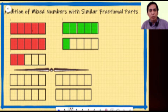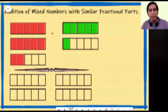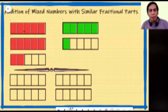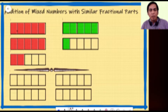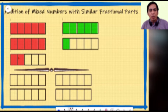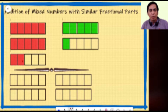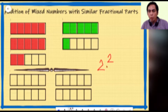First, we identify the two mixed numbers we are going to add. Looking at the red tiles: each whole is divided into five equal parts. We have one whole, another whole, so that's two wholes. But this last tile has only two parts shaded, so we have two fifths. That gives us the mixed number two and two fifths.